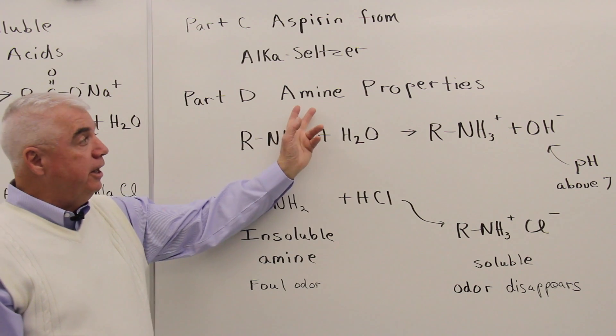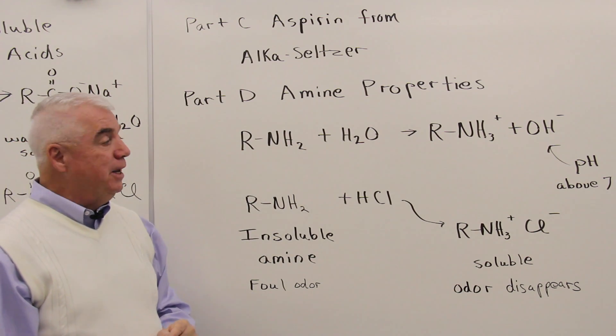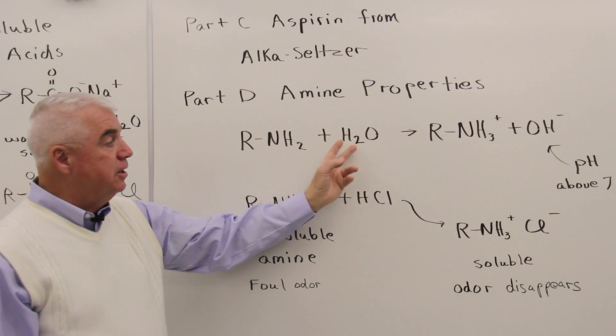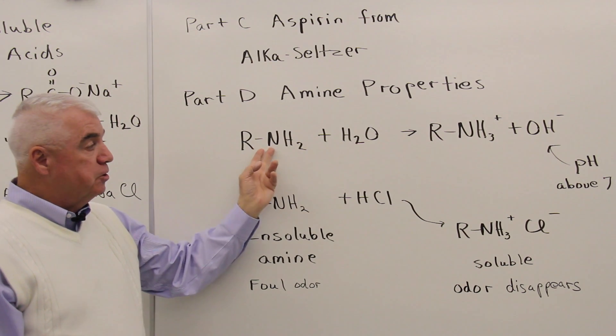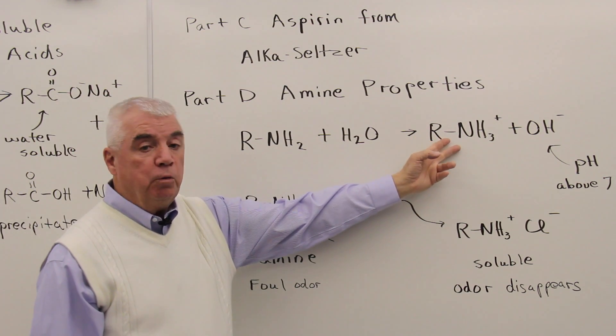In Part D we're looking at amine properties. Here's the general formula for an amine. Amines are organic bases. So when an amine dissolves in water, this nitrogen attracts a proton, becomes protonated, we have an ionic material.